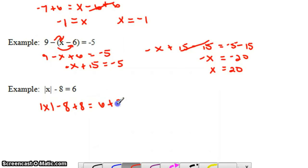On the right side, I have 6 plus 8, which is 14. Those are inverse operations—negative 8 and positive 8 cancel each other out.